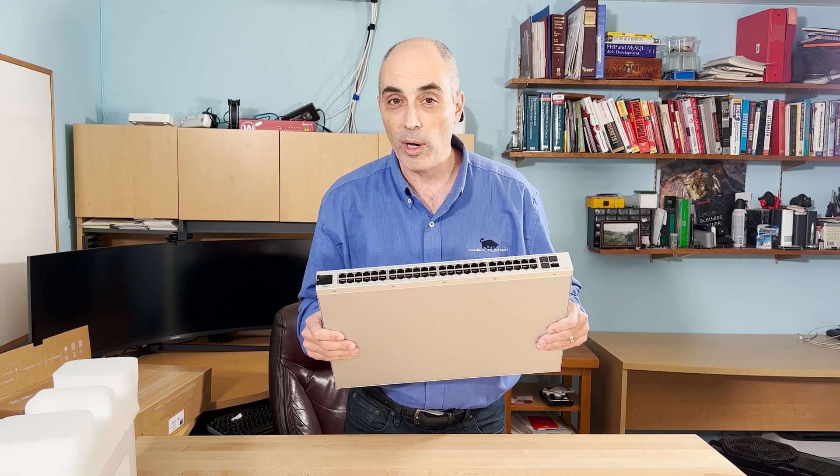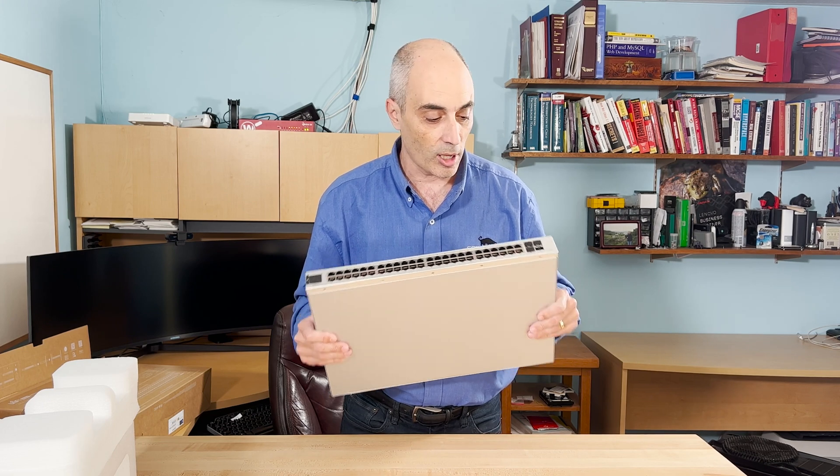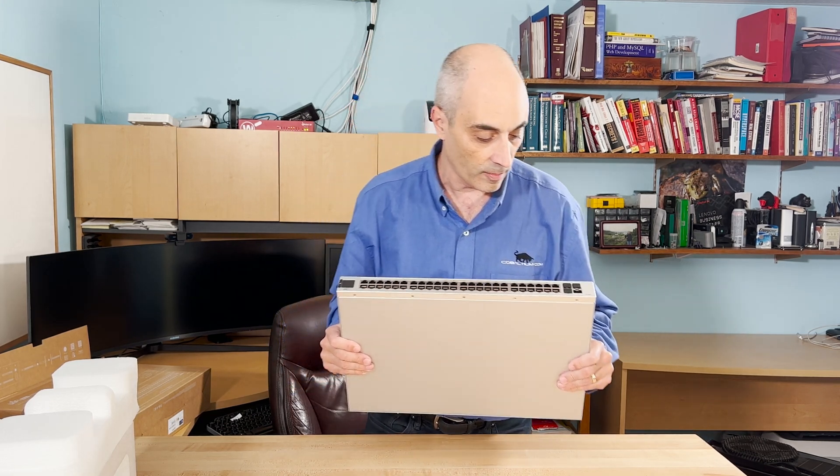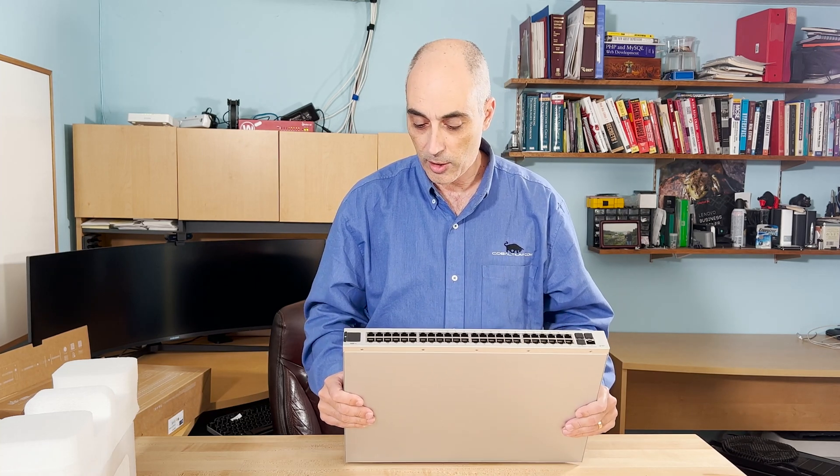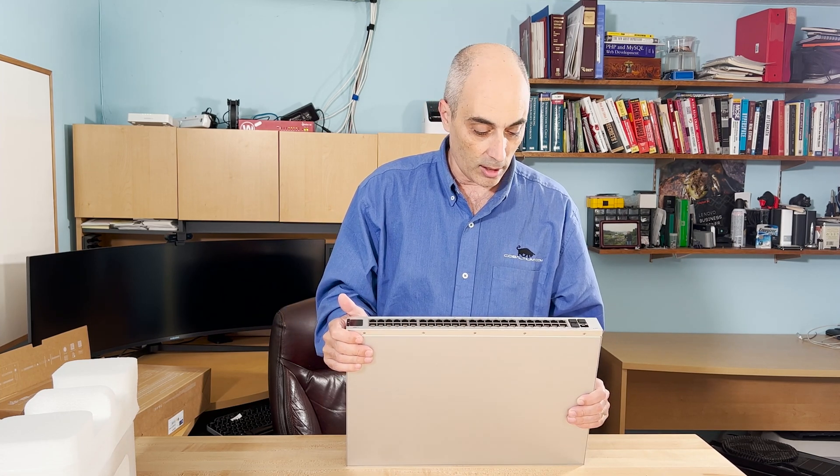The nice thing about Ubiquiti - and a lot of other brands have this as well, so it's not unique, though I think they were one of the first ones to really make a nice display - is you have the ability to use either a mobile phone to manage this, so they have an application, or you can use a network application that you can load. There's also a unit that you can purchase which is basically a small controller - it's a physical one - and it basically plugs into one of the ports and it does require power as well.